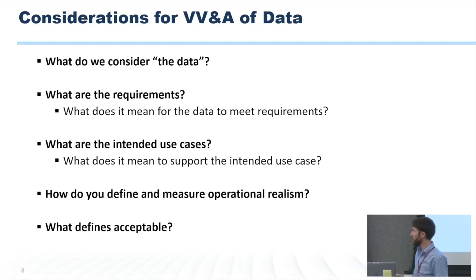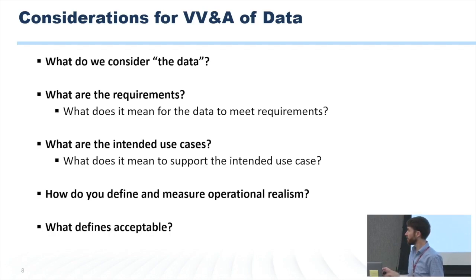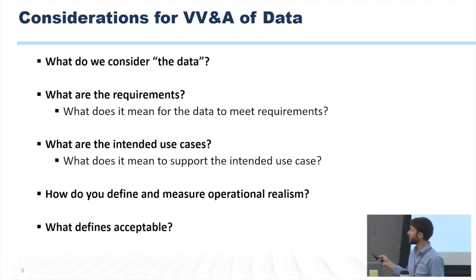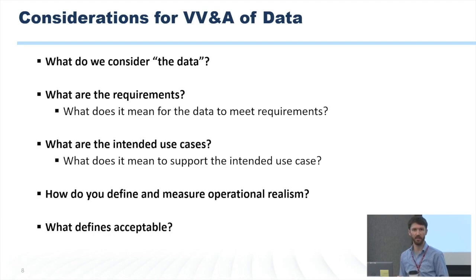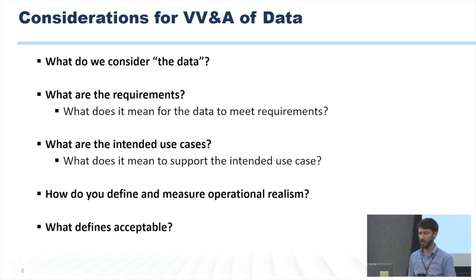We need to think about the downstream use cases and how we're going to measure and define operational realism, and of course what our acceptability criteria are. I'm not actually going to talk about how to do VV&A in this talk — we obviously don't have enough time for that. From some of the other presentations here, you've gotten a flavor for some of the ways that we can do VV&A and some of the activities that might be useful for V&V. What I am going to talk about as I walk through this are some best practices. We're going to talk about these considerations and then round that out with some things that are sort of general best practices.